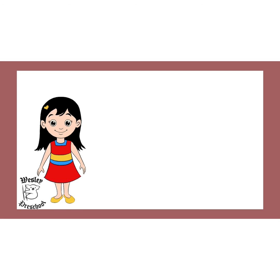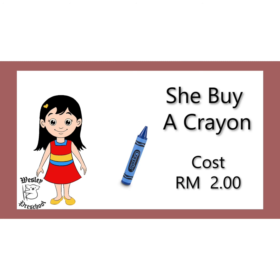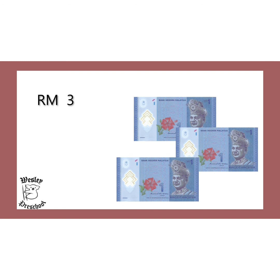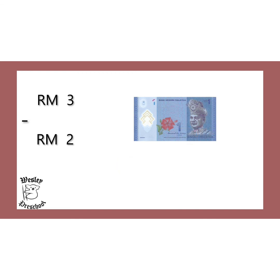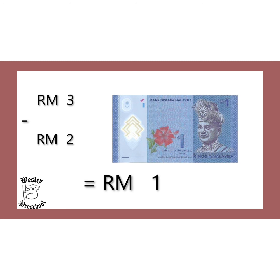Oh, Sarah — it's time to go back home. Wait! Sarah buys a crayon that costs 2 ringgit before she goes back home. Can you help me count how much she has left after she bought the crayon? 3 minus 2 — minus means cut. Cut 1, cut 2. So, how much is left? She has 1 ringgit left.